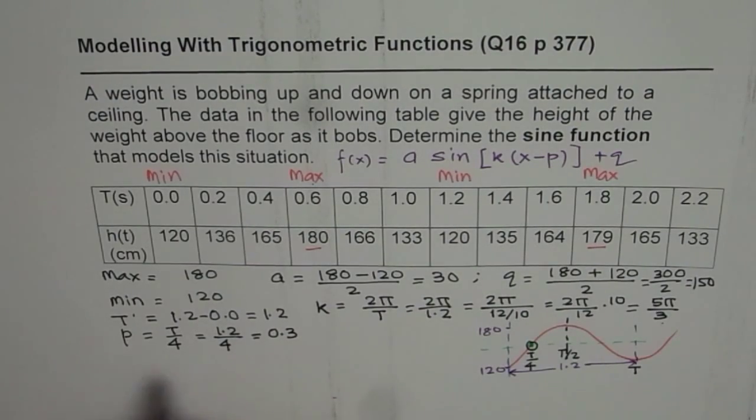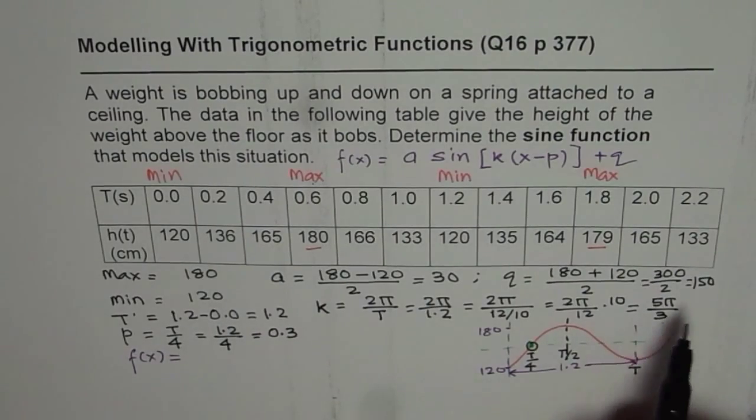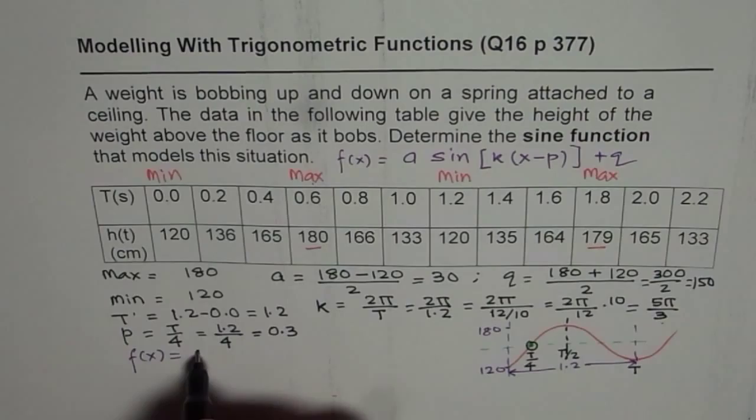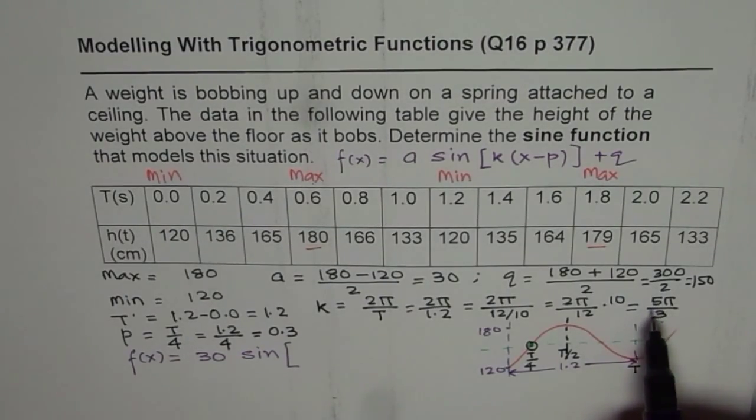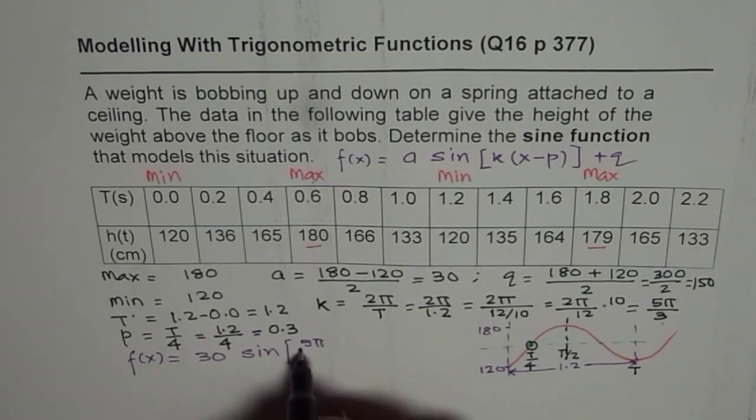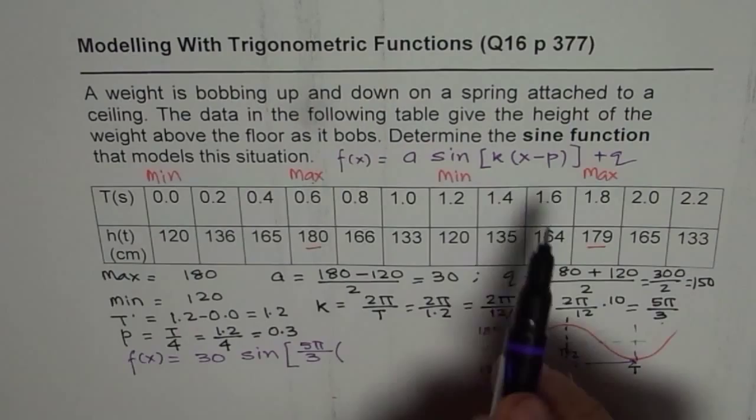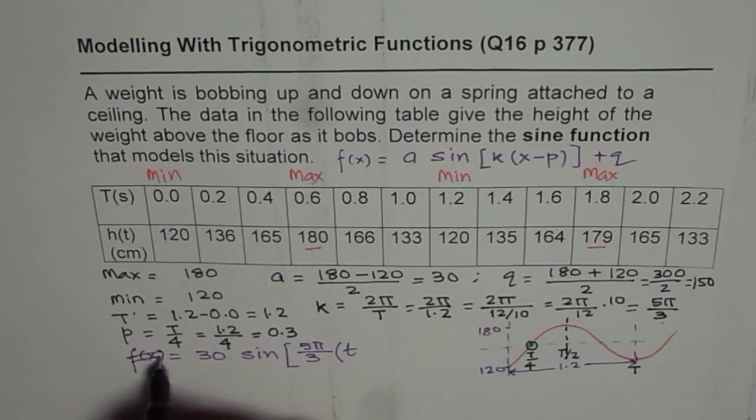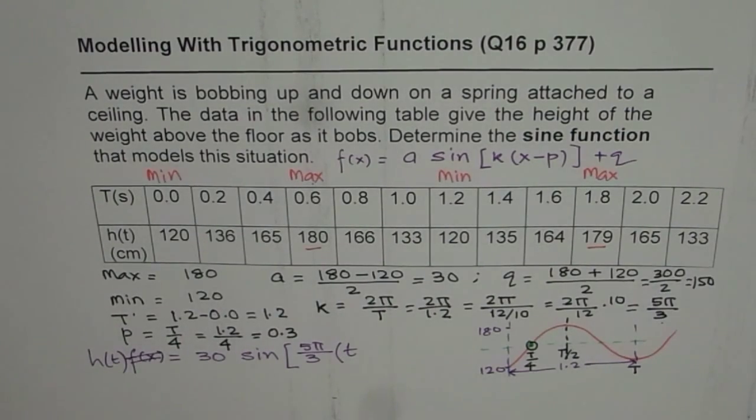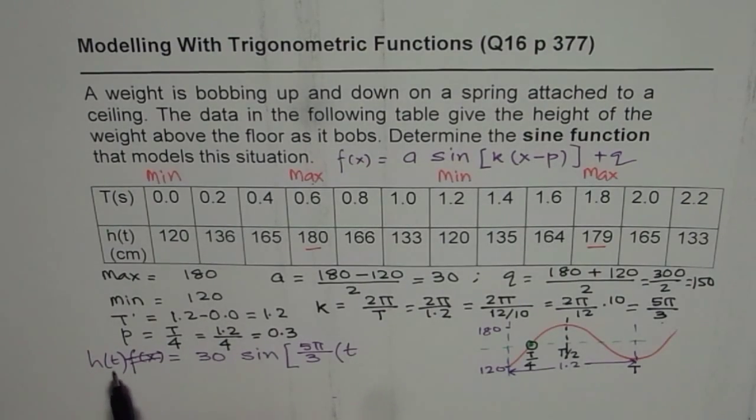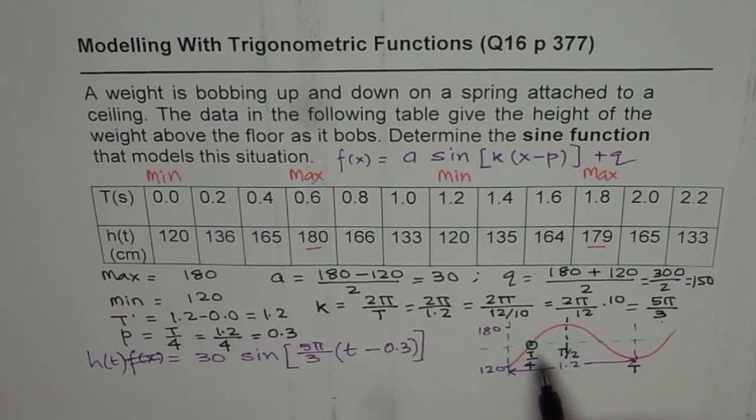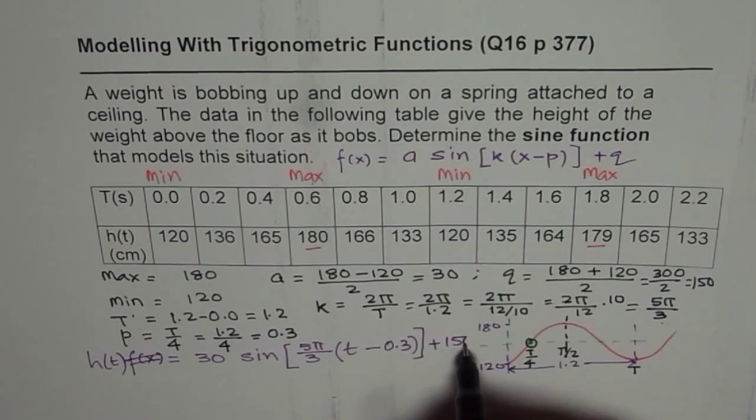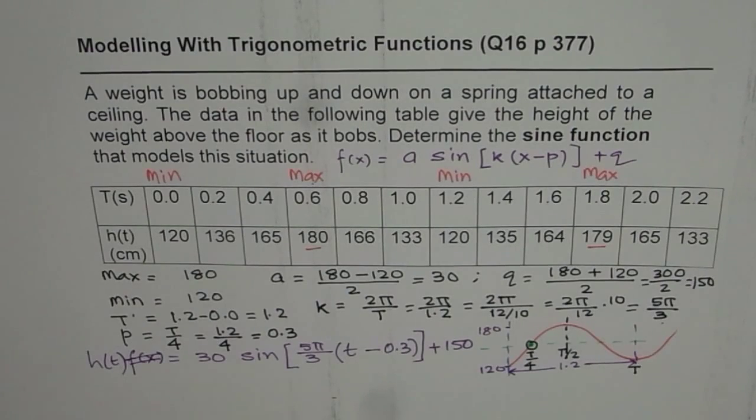So now, knowing all this, we can write down our function, which is f of x is equals to the amplitude, which is 30, sine of, since we want a sine wave, the key value for us is 5π by 3. So, if we, I should have written t, because t is the value, h of t, let me write, instead of f of x, let us write h of t as our function, t is our independent variable, and height, with reference to time, is the y value, so t minus, since it starts quarter of the cycle, 0.3. And, q is 150, plus 150. So, that becomes the required sine wave from the data.